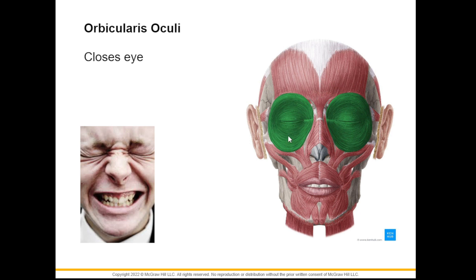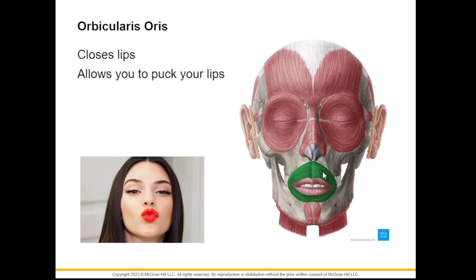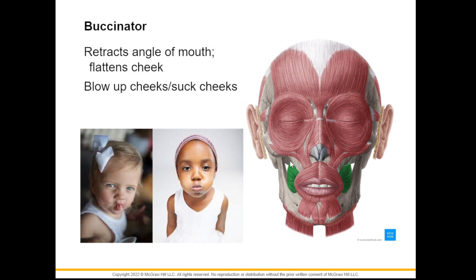This is your orbicularis oculi — it is a circular muscle. Orbicularis means circular, and it encircles our eyes. Its job is to close our eyes. Next is the orbicularis oris, again another circular muscle. It encloses your lips, closes your lips, and also allows you to pucker your lips just like when you kiss. Next is the buccinator, the muscle important for forming the lateral walls of the cheeks. Aside from keeping food inside the mouth, its other job is to retract the angle of the mouth.